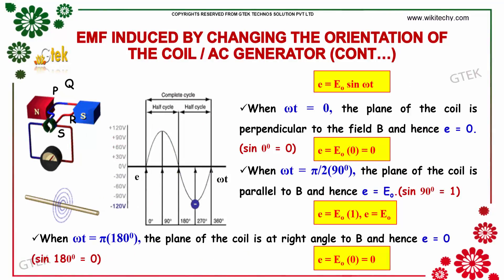As you know, the equation is E equals E0 sin omega t. When omega t equals 0, the plane of the coil is perpendicular to the field and hence E equals 0 since sin 0 degree equals 0. So here sin 0 degree equals 0 will become E equals E0 into 0, that's 0. So we don't have any induced EMF at omega t equals 0.